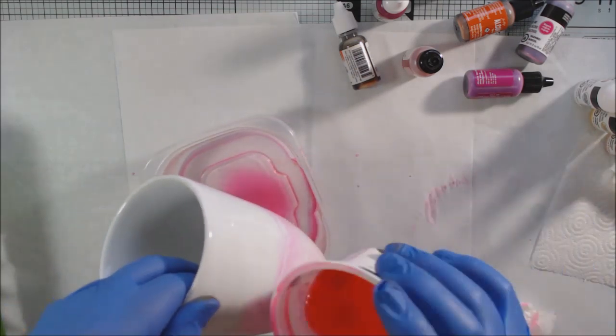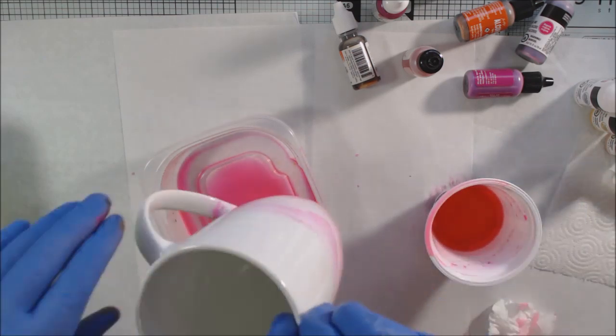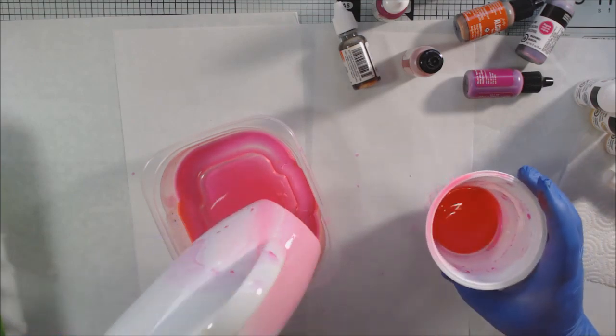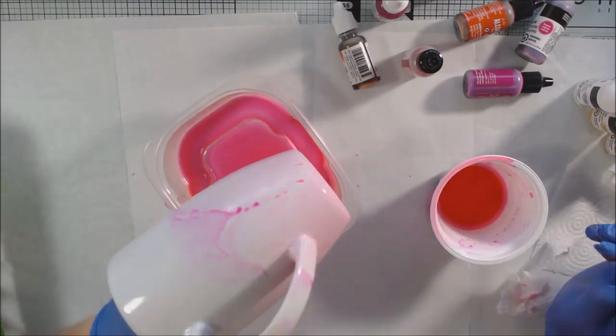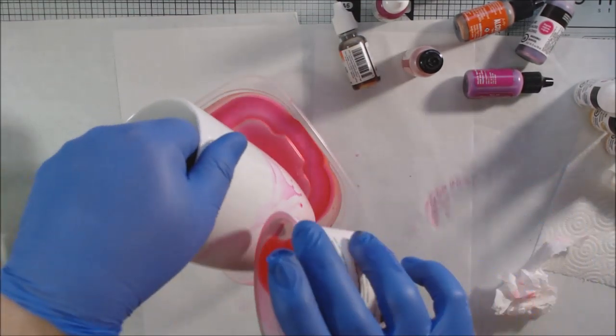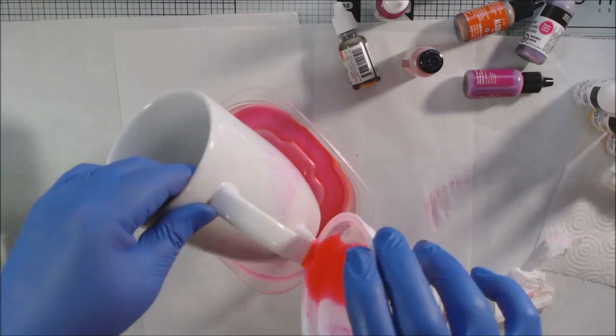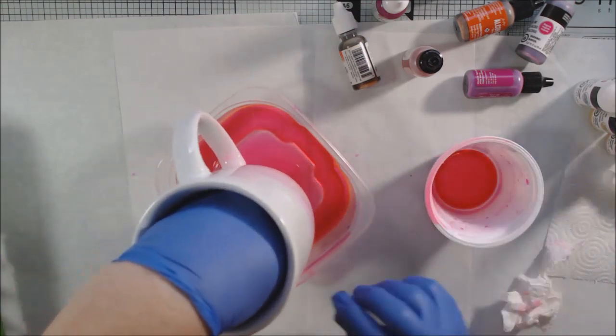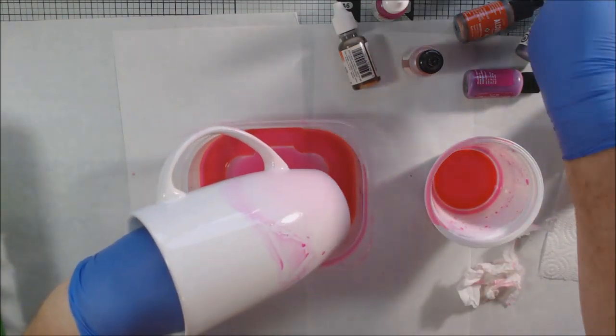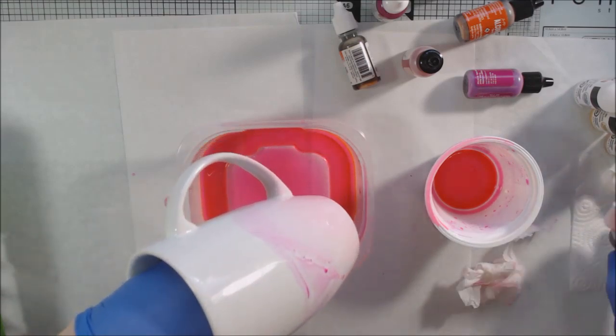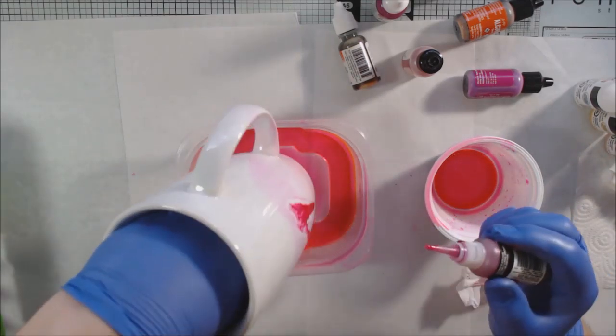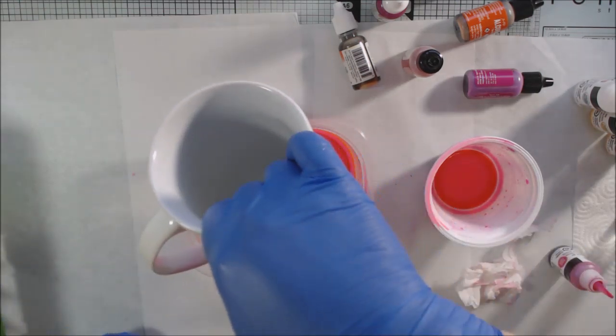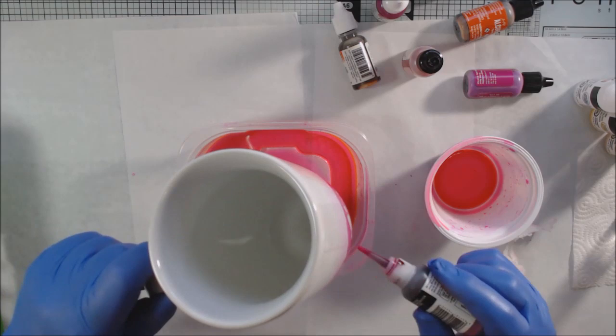Then I decided to try this pouring method that I saw someone doing. If you search alcohol ink on ceramic, you'll find different videos. I'm definitely not an expert here. I put some rubbing alcohol in a used yogurt cup I'm recycling instead of buying something new.